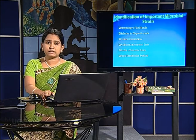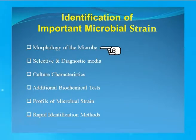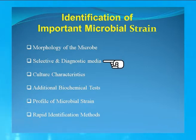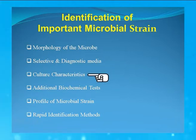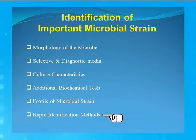After isolation, identification of the microbe is required. Identification of important microbes can be done by the following characteristics: number one, by observing the morphology of the microbe; number two, by the use of selective or diagnostic media; number three, by observing the culture characteristic of the microbe; number four, by performing additional biochemical tests; number five, by observing the profile of the microbe; and number six, there are other methods known as rapid identification methods.